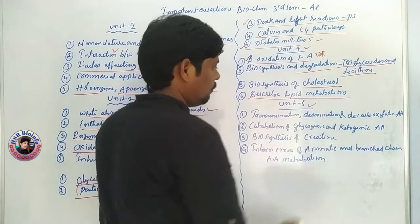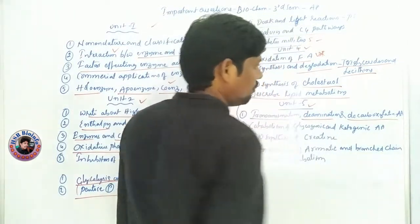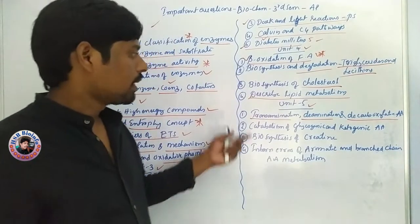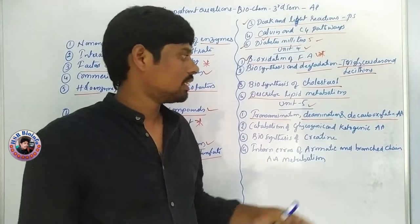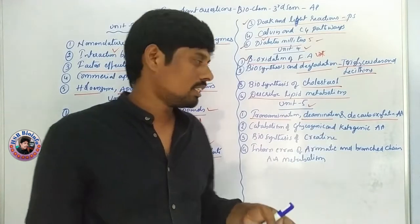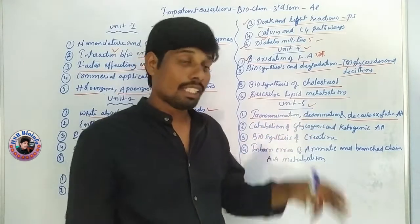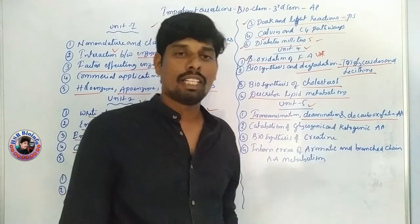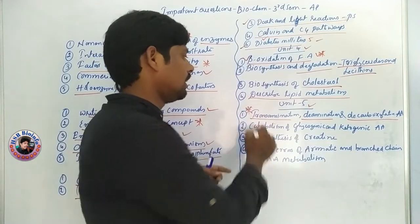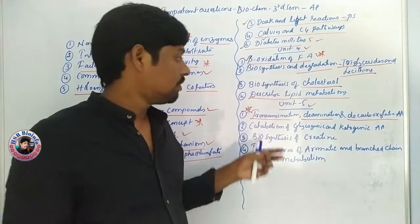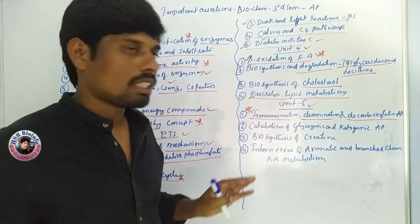Coming to the 5th unit. In the video: transamination, deamination and decarboxylation of amino acids. So the transamination and decarboxylation of amino acids — the carboxyl group is involved. This is very important because transamination is 5 marks, deamination is 5 marks, and decarboxylation is 5 marks.